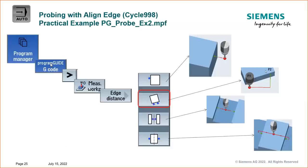One of the coolest Siemens cycles is the align edge cycle. If you've spent time setting up machines for an eight-hour day, you're constantly tramming in devices and workpieces. This cycle lets you come in, hit two points, and align your C-axis. You can do it a couple of different ways.